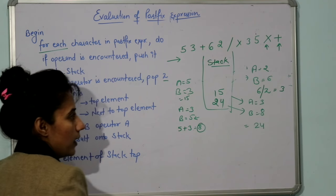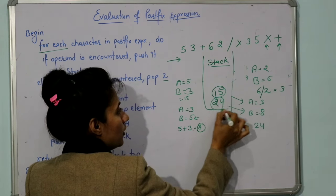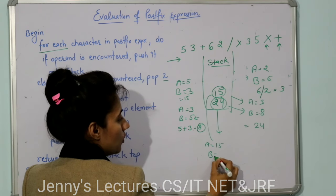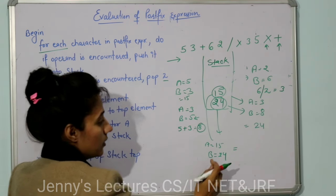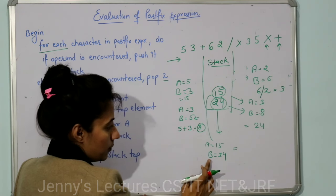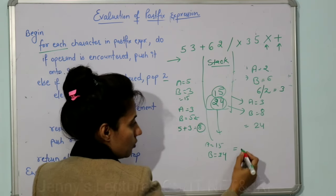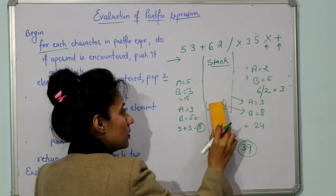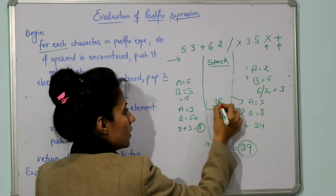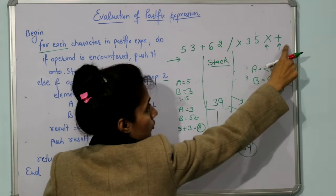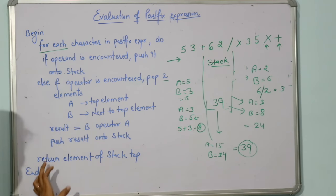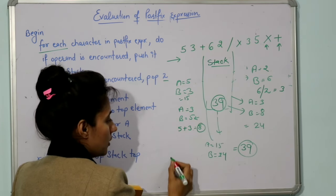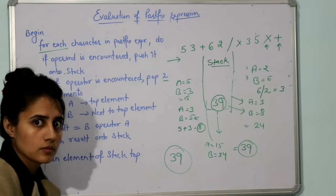Next operator is plus. Pop 15 and 24: A = 15, B = 24. Result is B + A = 24 + 15 = 39. Push 39 onto the stack. Now we have no more characters, so we return the top element of the stack. The result is 39.